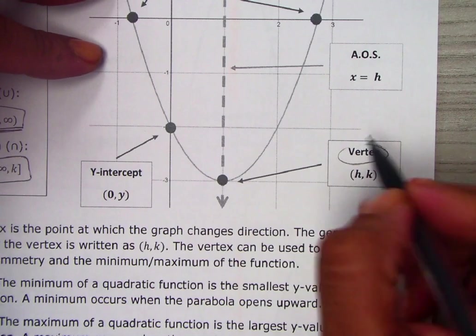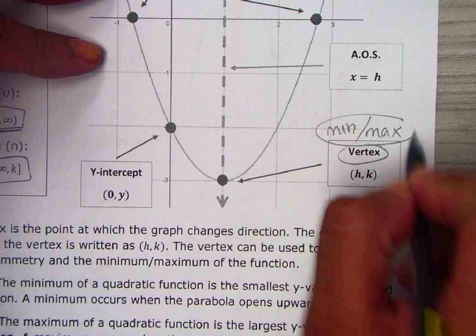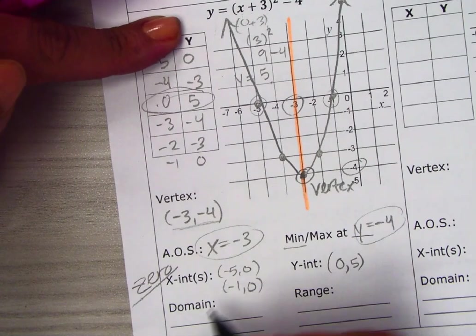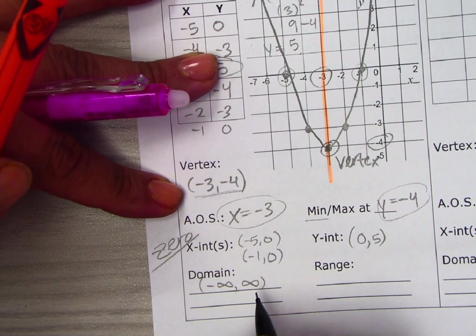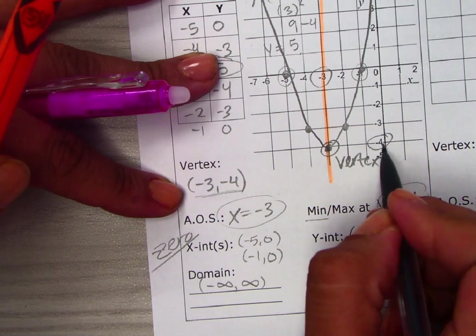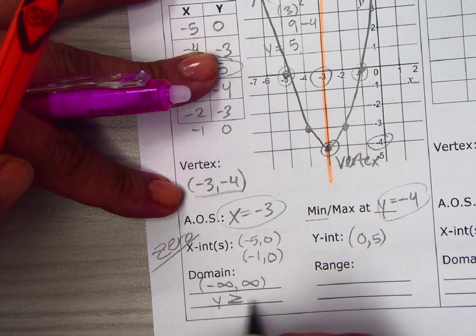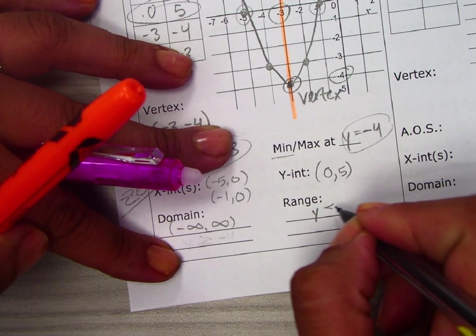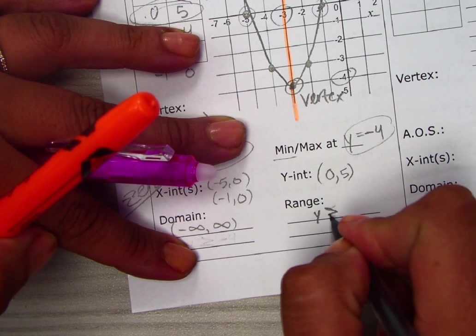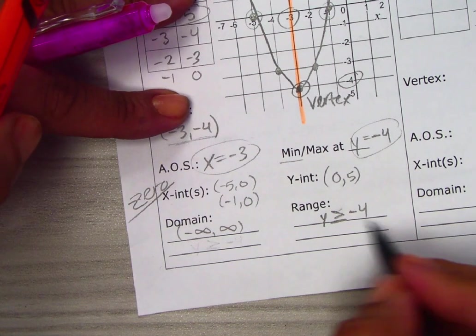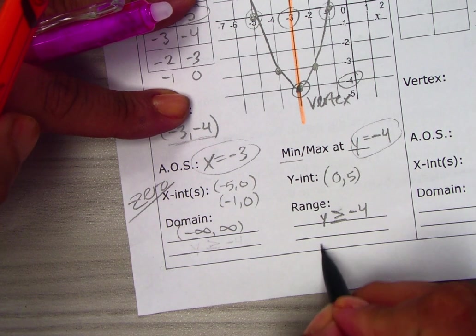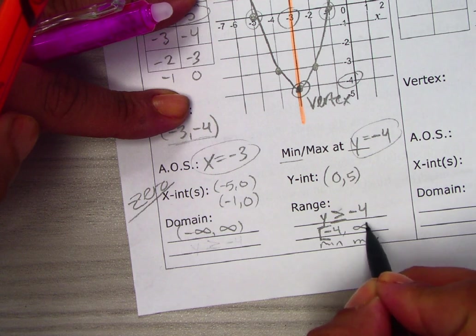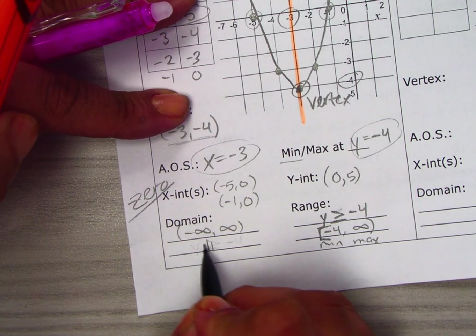For domain, we have arrows at the end, so domain goes left and right forever: negative infinity to positive infinity. For range, the lowest we go is negative 4, so y is greater than or equal to negative 4. In interval notation, the minimum is negative 4 and the maximum is infinity, giving us [-4, ∞) with a bracket at negative 4 and parentheses at infinity. Domain is all real numbers.